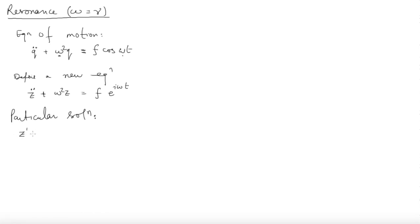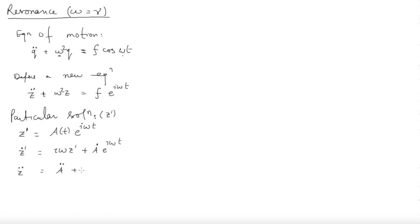Let us try a particular solution of this form: z' = a(t)·e^(iωt), where a is a function of t. You can check that ż' = iω·z' + ȧ·e^(iωt). If you take the second derivative you get [ä + 2iω·ȧ − ω²a]·e^(iωt). You should check this carefully.